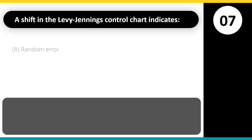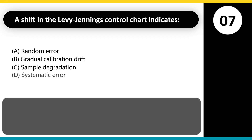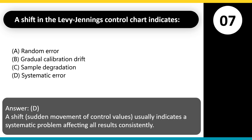A shift in the Levy-Jennings control chart indicates: A. Random error. B. Gradual calibration drift. C. Sample degradation. D. Systematic error. Answer: D. A shift — sudden movement of control values — usually indicates a systematic problem affecting all results consistently.